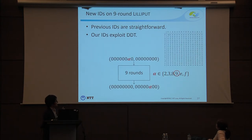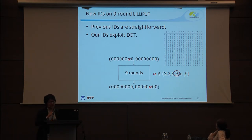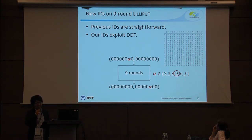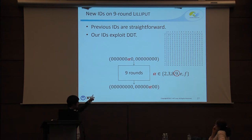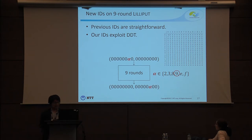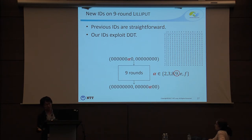Let's see how we find the impossible differential for Liripat. The previous impossible differentials are straightforward, but our impossible differentials perfectly exploit the differential distribution table. This table is the DDT of the Liripat S-box. The conclusion is: if the input difference is alpha and the output difference is as shown, then after nine rounds — when alpha is chosen from {2, 3, 8, 9, F} — the pair of input and output differences becomes an impossible differential. Due to time constraints, I only explain why alpha = 9 gives an impossible differential.